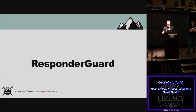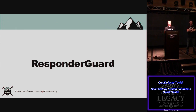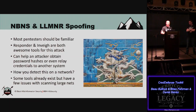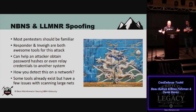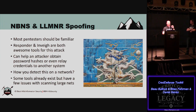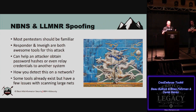Responder Guard is a tool that will allow you to find Responder on your network. NBNS and LLMNR spoofing — I guarantee every pen tester in the room has done this. You get onto a network and 99% of the time you're going to get hashes. You basically respond to somebody trying to authenticate to something like an SMB share. You can end up spoofing invalid host names and direct people to hit your SMB server, at which point you'll get NTLMv2 hashes, or you can relay to other hosts in the network — you don't even have to crack the hash.